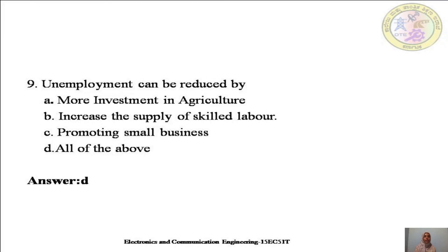The next question: Unemployment can be reduced by — A. more investment in agriculture, B. increase the supply of skilled labour, C. promoting small business, or D. all of the above. Unemployment can be reduced by all of the above — the answer is D. We can reduce unemployment by investing more in the agricultural field, by increasing the supply of skilled labour, and by promoting or encouraging small-scale business.